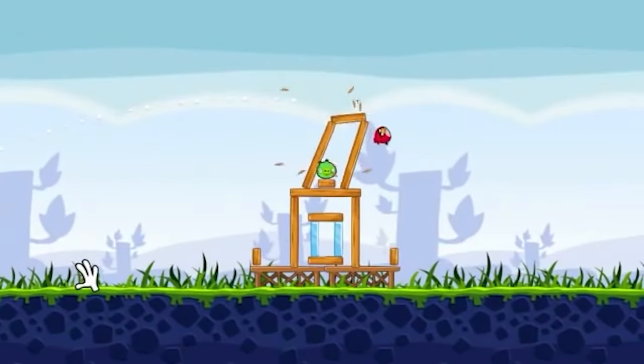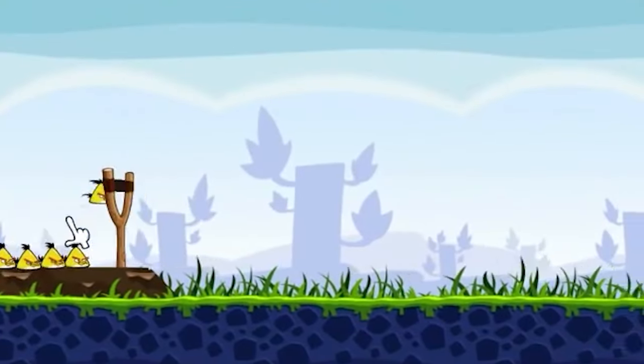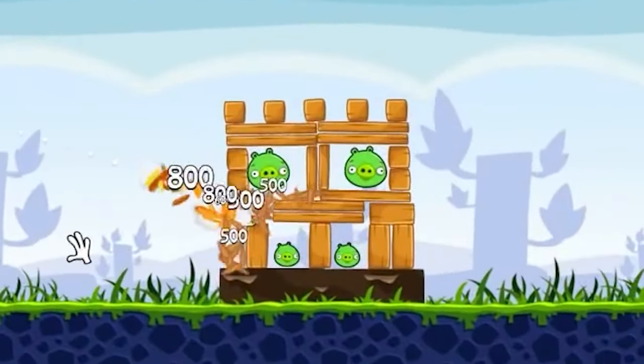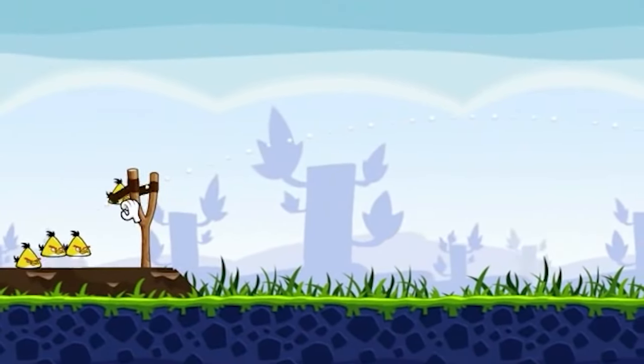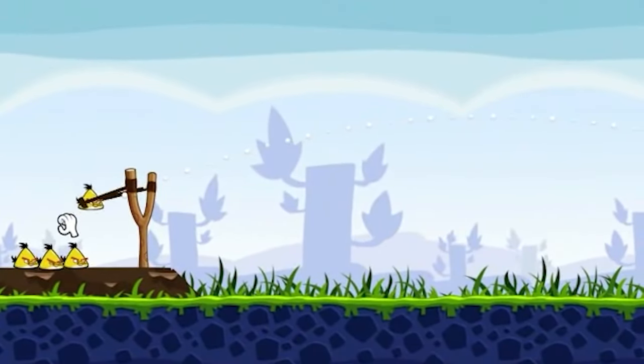For example, in the classic game Angry Birds, the trajectory of the birds is determined by Newton's Laws of Motion. The birds move through the air in a parabolic arc based on their initial velocity, angle of launch, and gravitational pull.